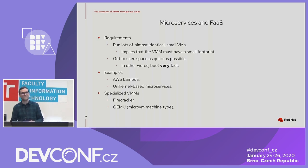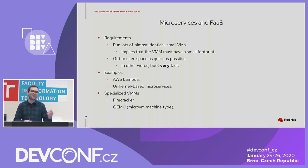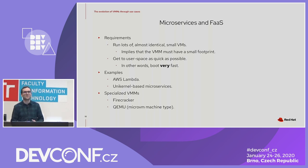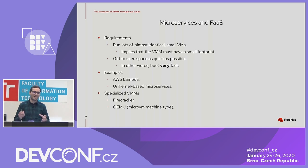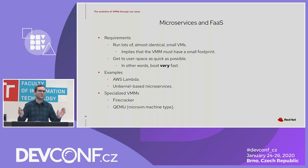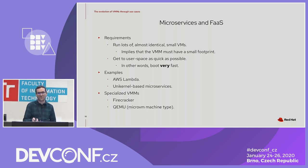Another example is unikernel-based microservices, which was a trend a couple of years ago, then faded away, and seems to be making a comeback. The idea behind unikernels goes one step further than containers: you link your application not only statically against dynamic libraries but also with the kernel itself, resulting in a static image that provides everything and gives you the lowest possible footprint. You just throw that into a VM and it's sufficient. Examples of specialized VMMs for this use case include Firecracker and QEMU with the introduction of the micro VM machine type.